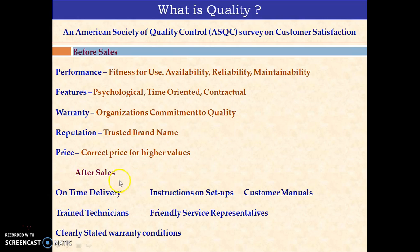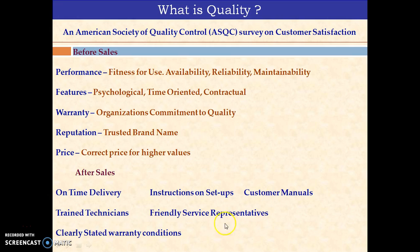As far as after sales, if you see customer satisfaction — which is one of the very important quality characteristics — on-time delivery, instructions on setup, if the customer manual is available, and customer call support: these are very important aspects of quality characteristics.